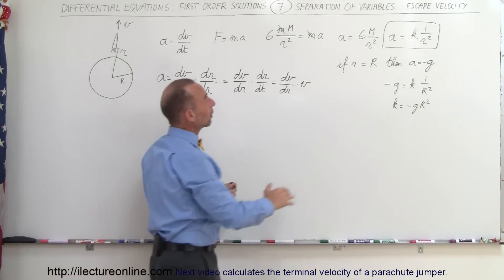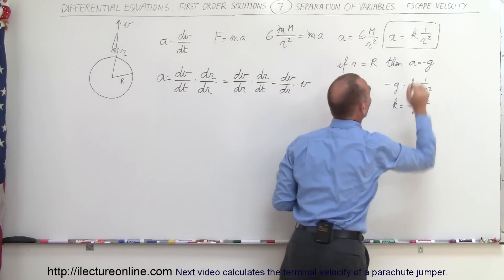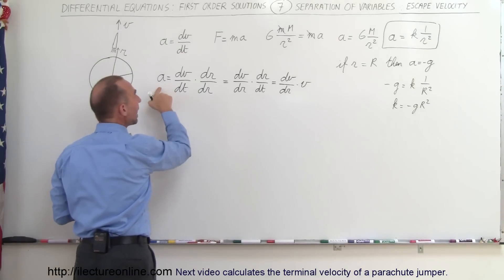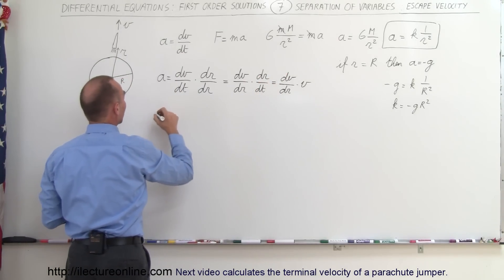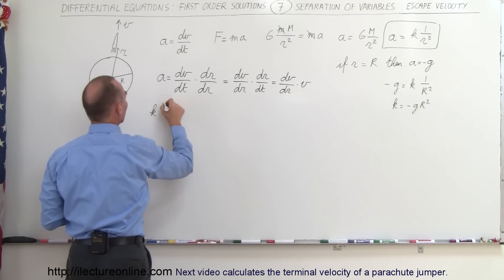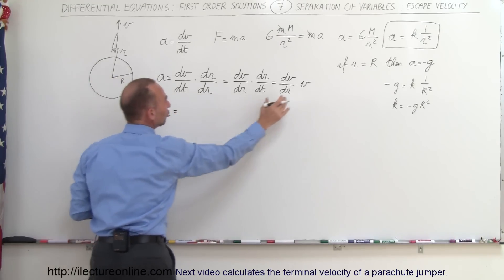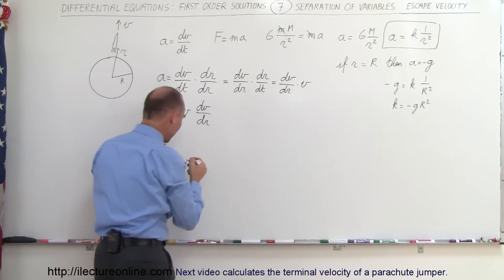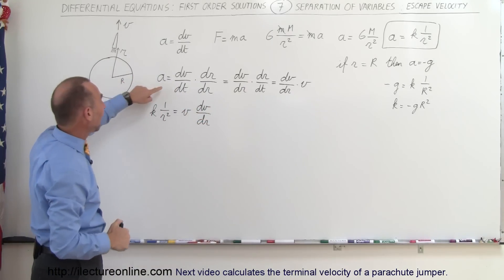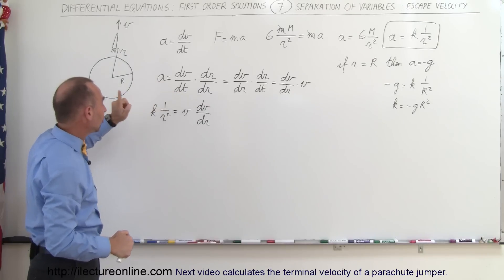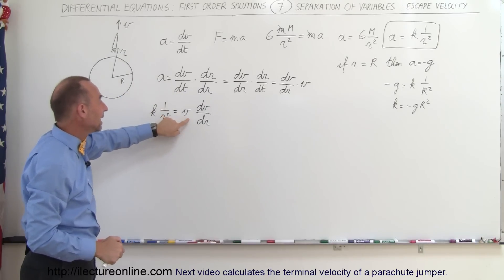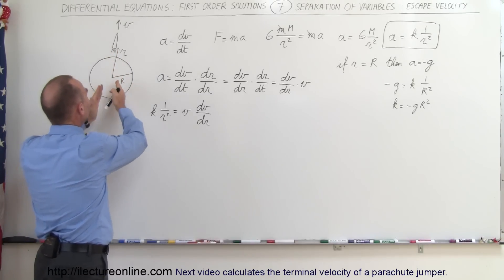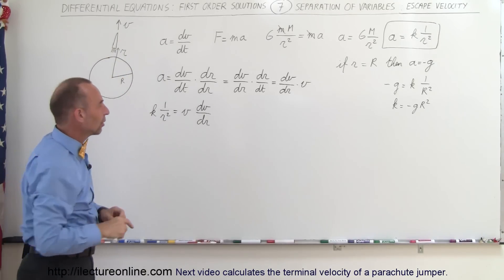I also have the equation A equals K times 1 over R squared. Relating those two, I can replace A and write: K times 1 over R squared equals V times dV/dr. Now I've changed the equation — which had acceleration and time in it — to an equation that only has velocity and distance. This gives me the relationship between velocity and position away from the Earth that I want to solve.